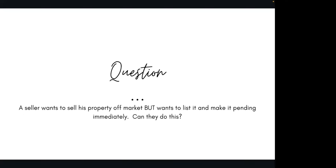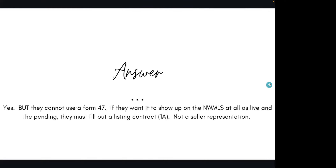What if the seller wants to sell his property off-market but also wants to list it and then make it pending immediately — can they do this? They can, but they cannot do it with Form 47. If they want it to show up on the MLS as live and then put it straight to pending, they have to fill out Form 1A. It is not considered a seller representation; it is just a plain old listing agreement.